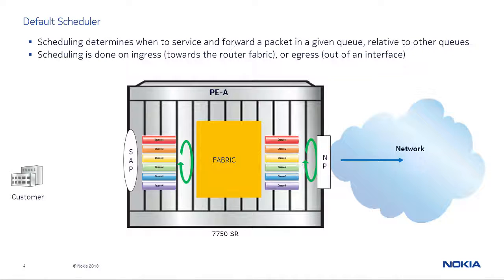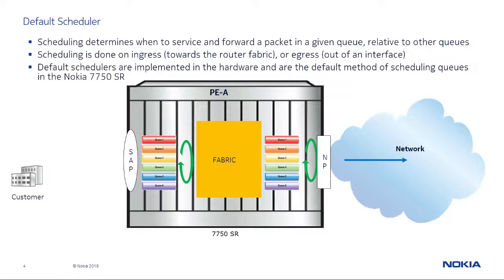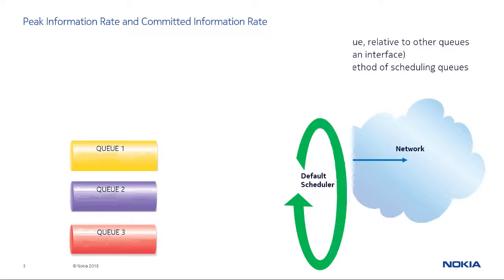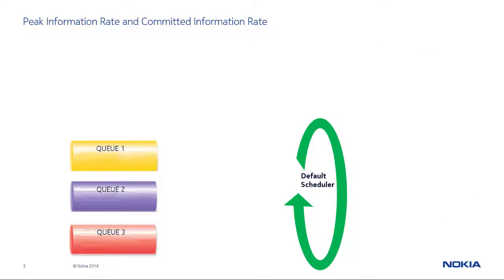Default schedulers are implemented in hardware and are the default method for scheduling queues in the Nokia 7750 service router. Now that we have explained what the default scheduler is, let's take a minute to discuss some of the parameters it uses to schedule traffic.